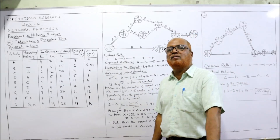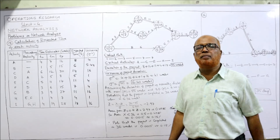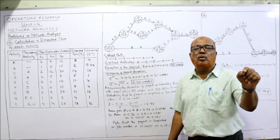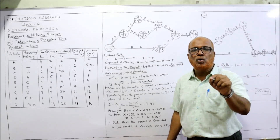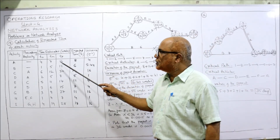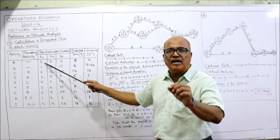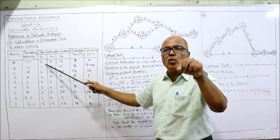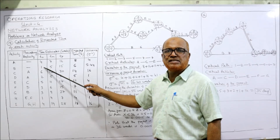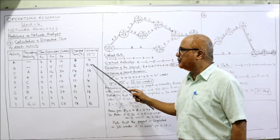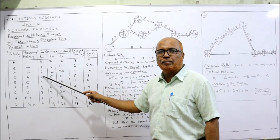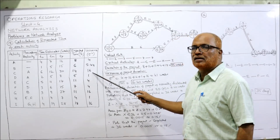Variance is required whenever we need to calculate probability, since this problem asks for probability. The variance formula is: Variance = ((TP − TO) / 6)². For A: (16 − 4) / 6 squared gives variance = 4. For B: (15 − 5) / 6 squared gives 5.4 (approximately). For C: (30 − 6) / 6 squared gives variance = 16. Calculate all variances similarly.